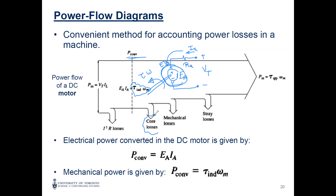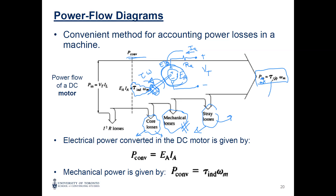After the converted power, we have core losses: hysteresis and eddy current. Then mechanical losses because the machine is rotating — we have bearings causing friction and air resistance called windage. There are also stray losses to balance the equation. At the end you have the output torque, which is different from the induced torque. The induced torque is on the shaft before losses; the output torque is lower.